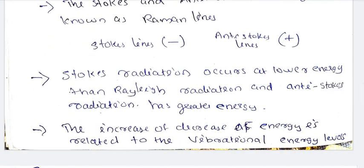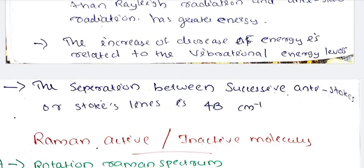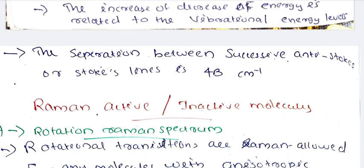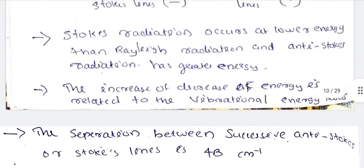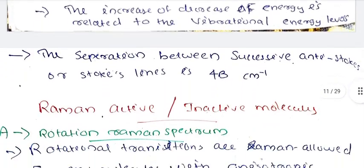Stokes radiations occur at lower energy than Rayleigh radiation, and anti-Stokes radiations have greater energy. The increase and decrease of energy is related to the vibrational energy levels. The separation between successive anti-Stokes lines and Stokes lines is 4B cm⁻¹.